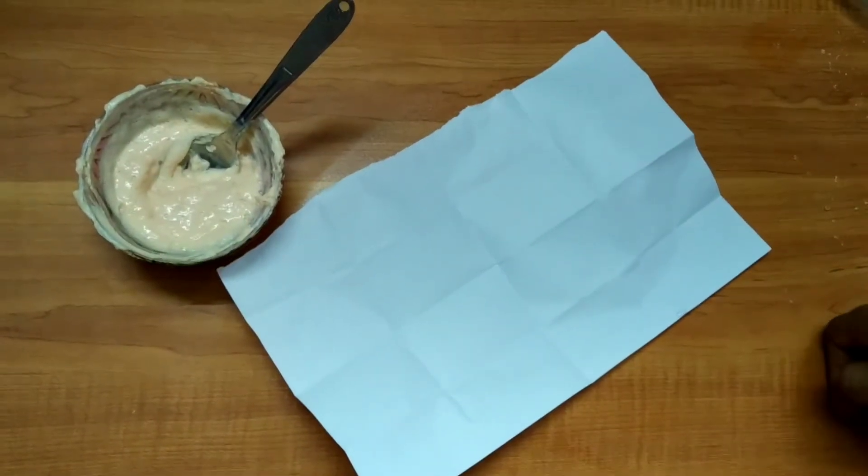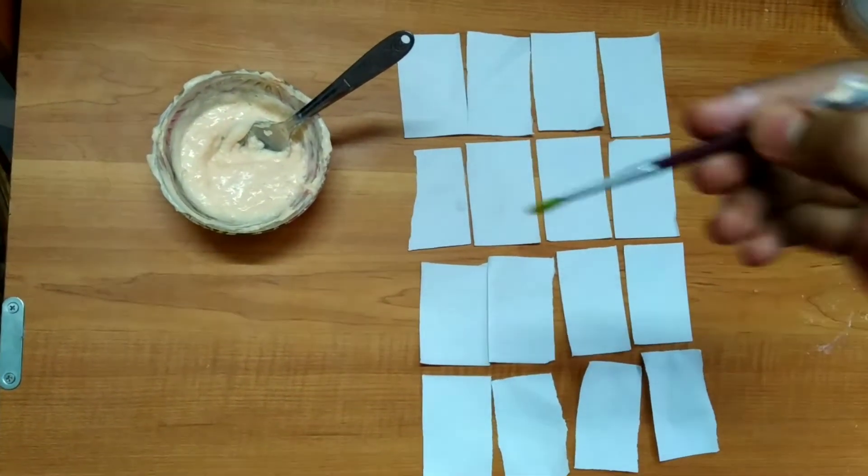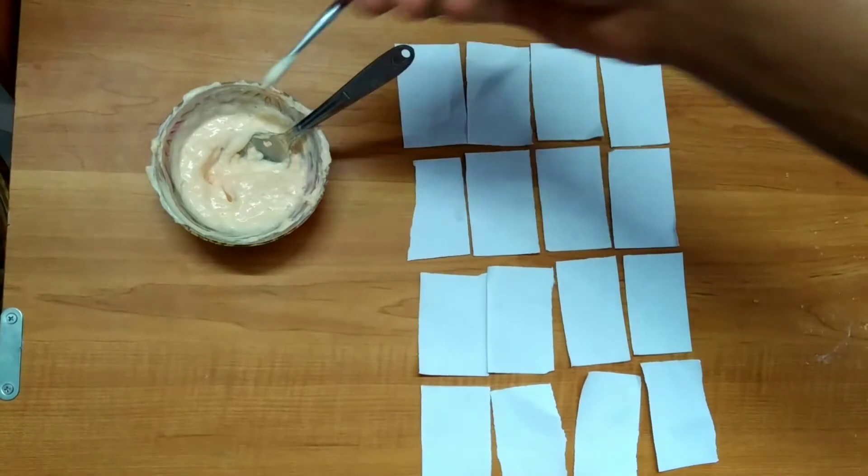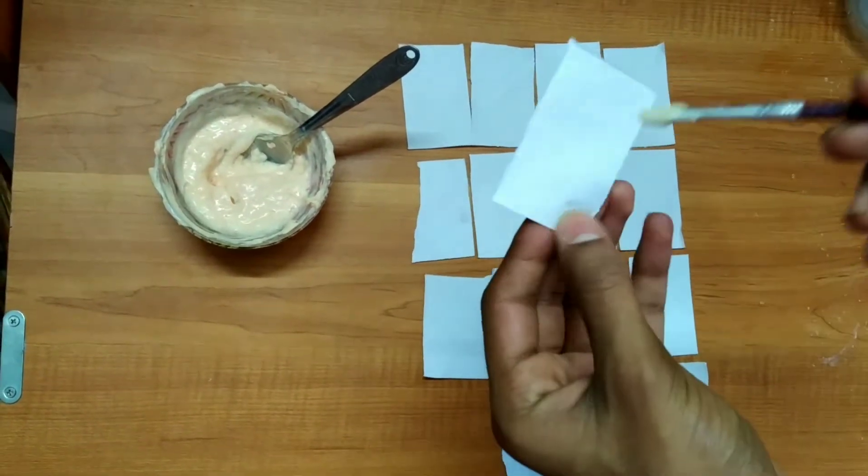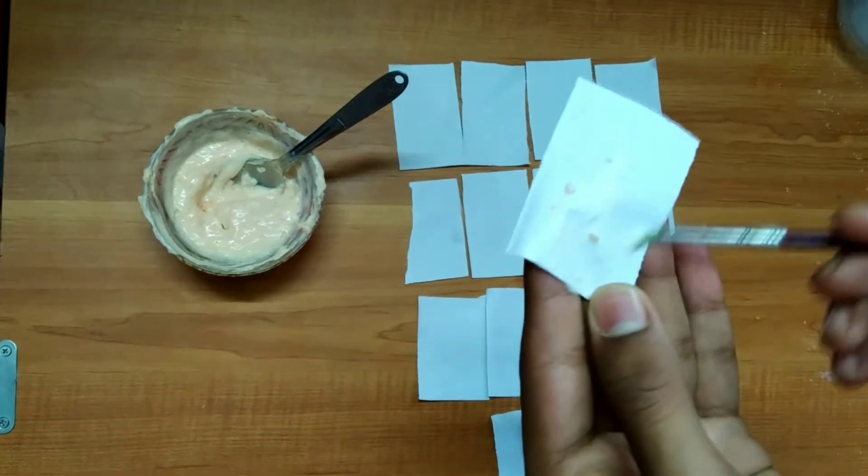Now apply the soap mixture on a few equally cut paper pieces with the help of a paintbrush and let it dry for 15 minutes. You need to apply the soap mixture on both sides of the paper.